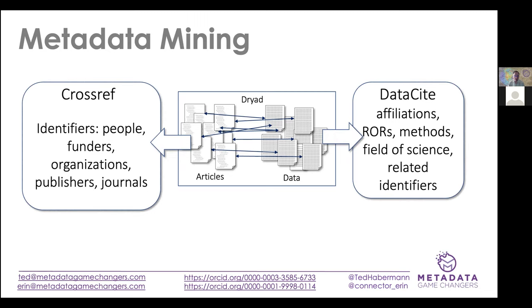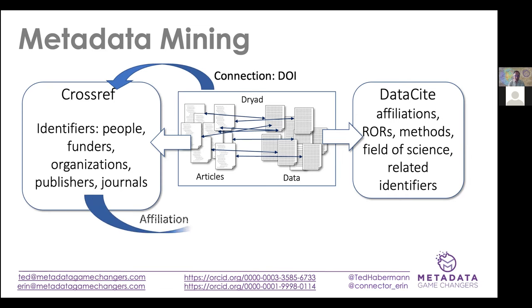Dryad is a good example of a repository that uses and relies on the global infrastructure effectively — both by pointing to DOIs that identify papers in Crossref and also using the Datacite metadata dialect as their primary dialect, sharing all of their metadata with Datacite. When we started this project, there were no affiliations in Dryad. So the first thing we did was take the DOIs that existed in Dryad for papers related to the datasets and use Crossref metadata to find authors and, more importantly, the affiliations for those authors.